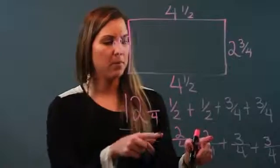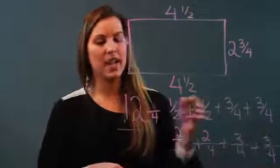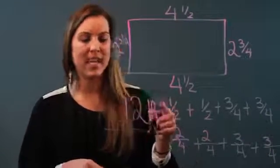I have 2 + 2 is 4, 4 + 3 is 7, and 7 + 3 is 10. So I have 12 and 10/4.